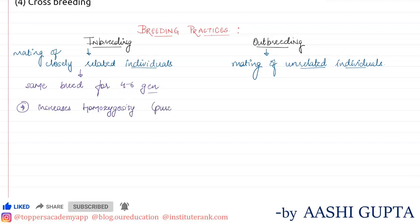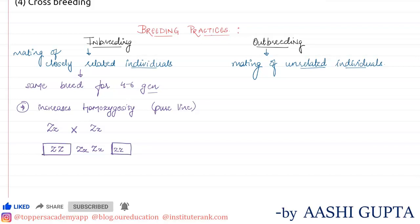Homozygosity means it develops a pure line of characters. Suppose the parents were heterozygous for a particular character X, or homozygous for character Z. When these are mated, the offspring will be ZZ, Zz, and zz. So we can see that homozygotes appear in the next generation. The more we mate these individuals, the more homozygosity increases — this is what is meant by homozygosity.